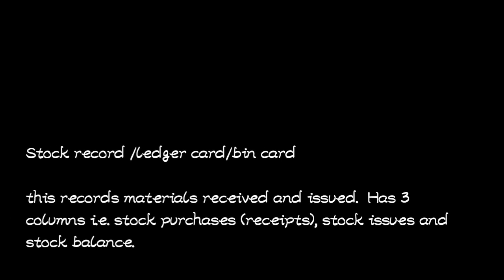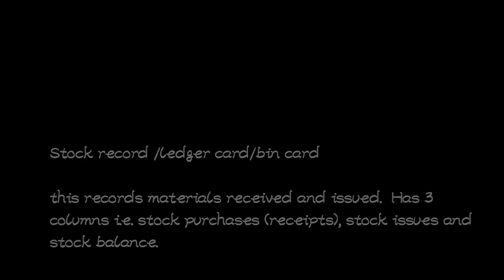Another document is the stock record, also called the ledger card or the bin card. This one records the materials that have been received and issued — what is coming in and what is going out. It has three columns: stock purchases, which are the receipts; stock issues; and the stock balance. So it shows what has been received, what has been issued, and the balance.